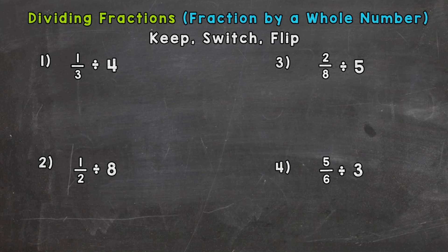Let's hop right in to number one. So we have one-third divided by four. Let's take a look at our steps up here. The first step is keep. So we're going to keep this first fraction as is: one-third.